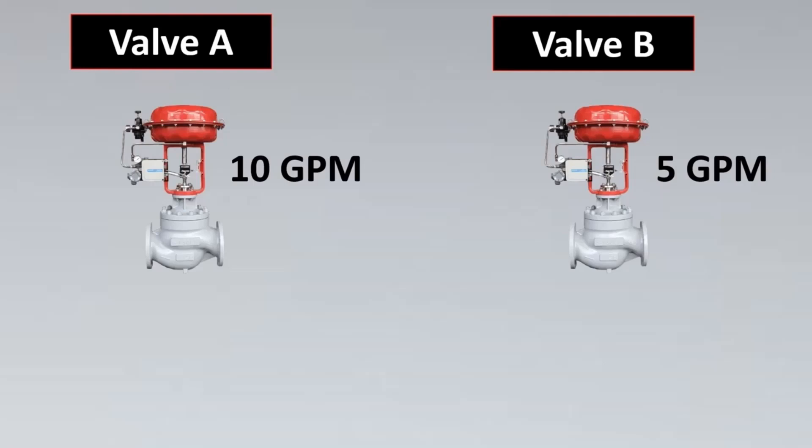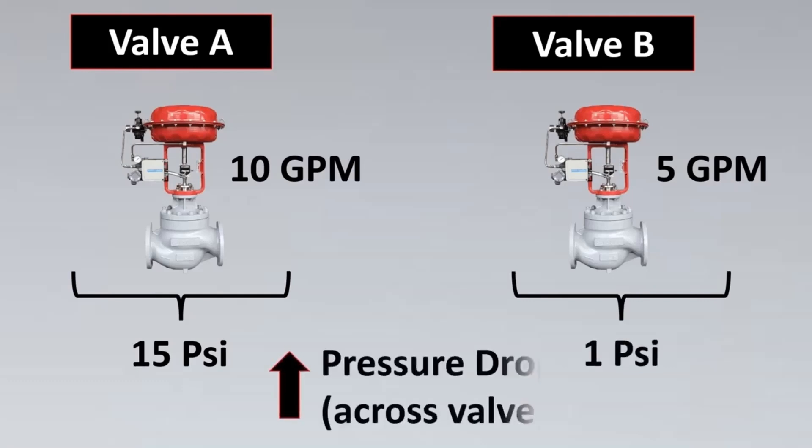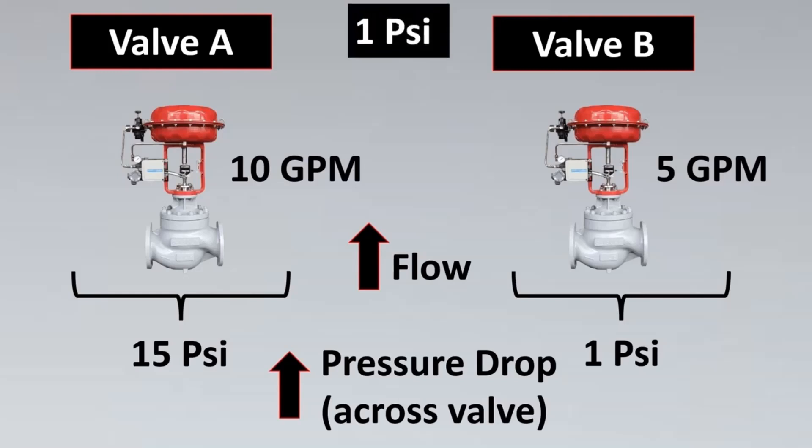But let us dig into this concept in such a way that we will remember this concept forever. As we had initially discussed, imagine that for valve A and for valve B we have a different flow rate. Valve A has a flow rate of 10 GPM and valve B has a flow rate of 5 GPM. Here as we had said we cannot say that this means that valve A has the higher flow capacity.